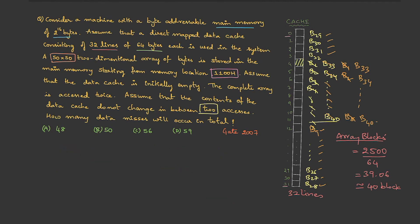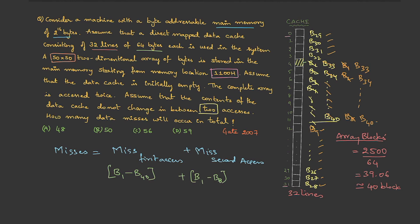Now let's calculate total misses: misses = misses in first access + misses in second access. During the first access, none of the blocks were in cache, so blocks 1 through 40 all miss — that's 40 misses. During the second access, blocks 1 through 8 are not present (8 misses), blocks 9 through 32 are hits, and blocks 33 through 40 are not present (8 misses). Total = 40 + 8 + 8 = 56.